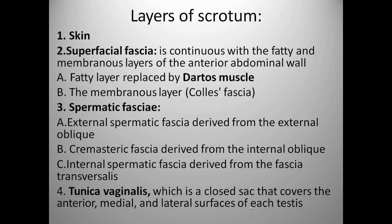Now we will see the layers of the scrotum. The first outermost layer is the skin. Then we have the superficial fascia, which is continuous with the fatty and membranous layer of the anterior abdominal wall and is divided into two layers: the fatty layer, represented by the dartos muscle, and the membranous layer, also called Colles' fascia. Then the spermatic fascia: external spermatic fascia derived from the external oblique, cremasteric fascia derived from the internal oblique muscle, and internal spermatic fascia derived from the fascia transversalis.